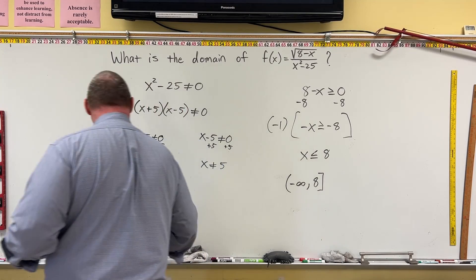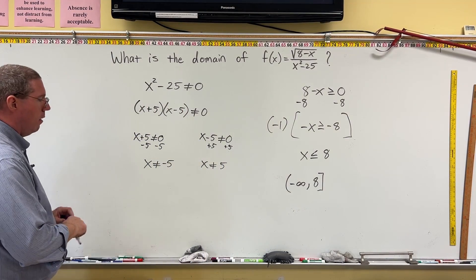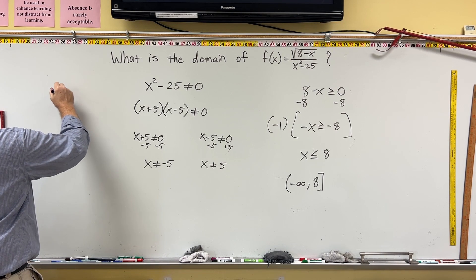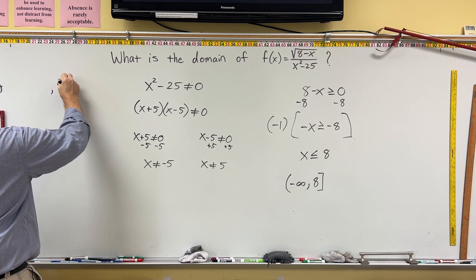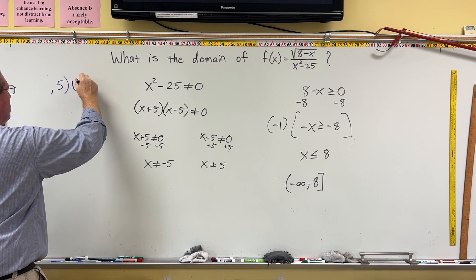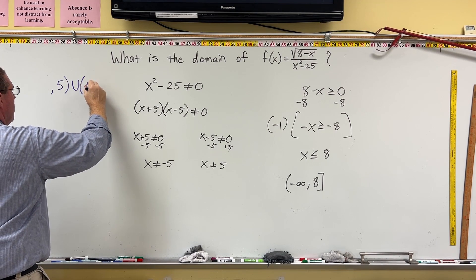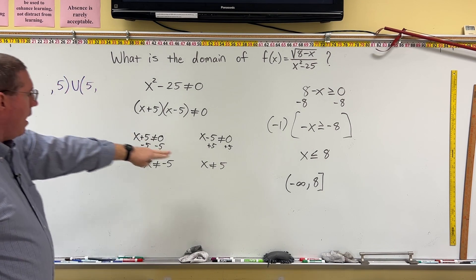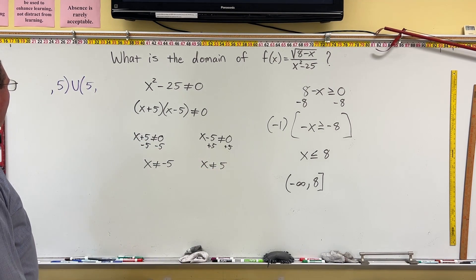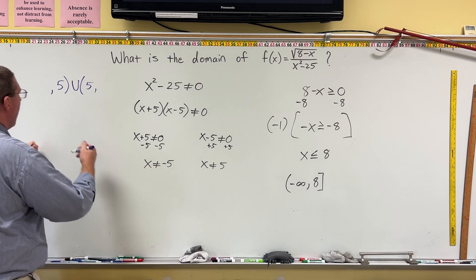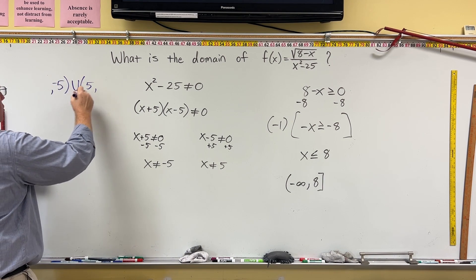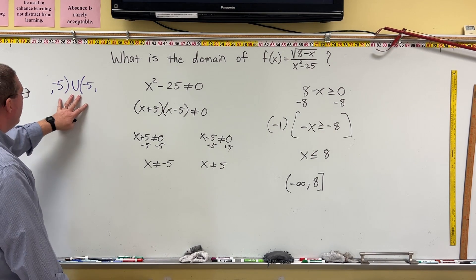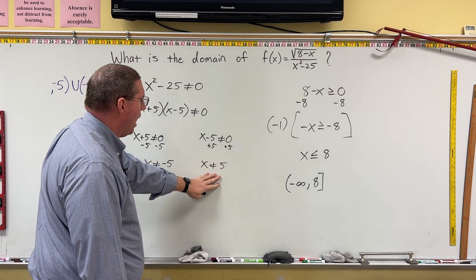Here's the symbolism for removing a number from an interval: you write comma, that number, parenthesis, union, open parenthesis, that number again, comma. This is how you remove a number. You need two of these — one for negative 5 and one for 5. The one for negative 5 comes first since smaller numbers are on the left and larger numbers are on the right.